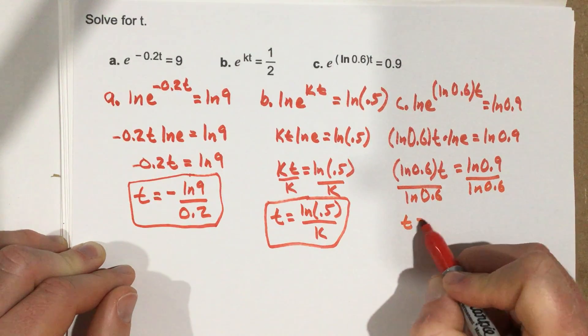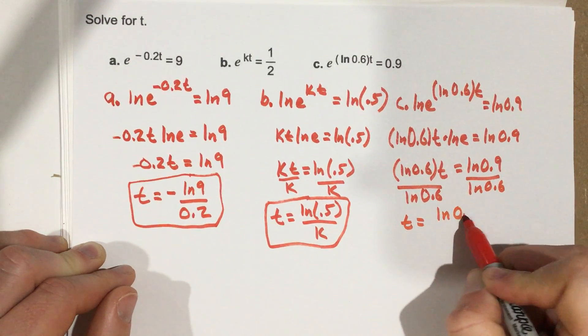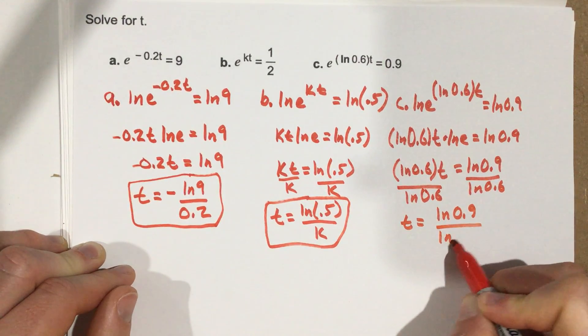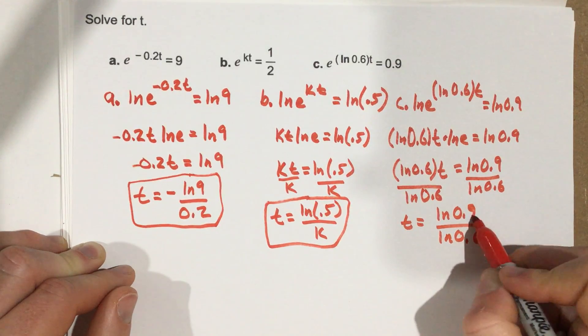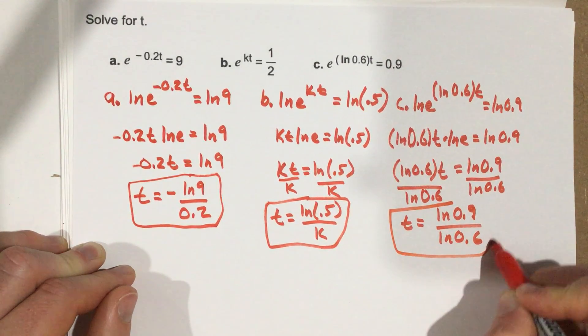And I end up with t equals natural log 0.9 over natural log 0.6. And now we solved for t.